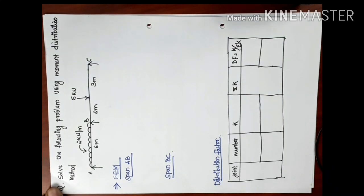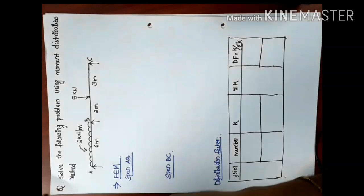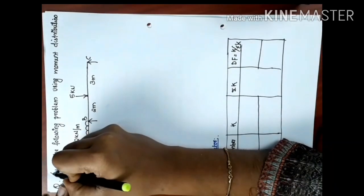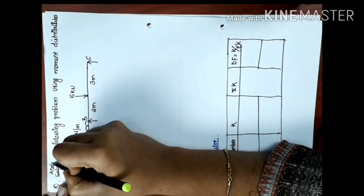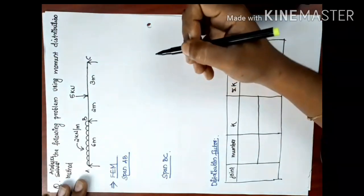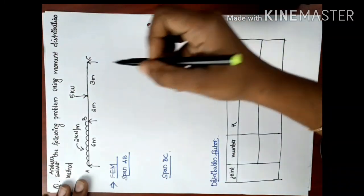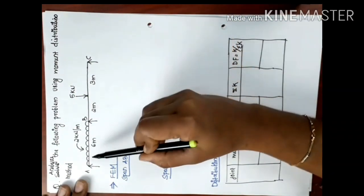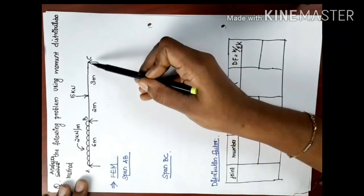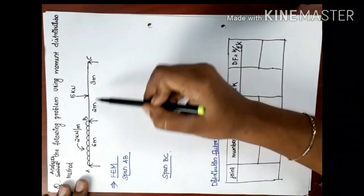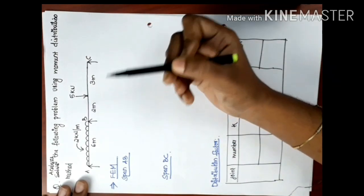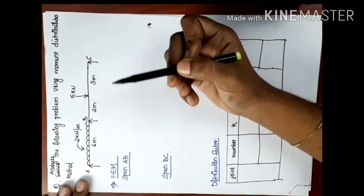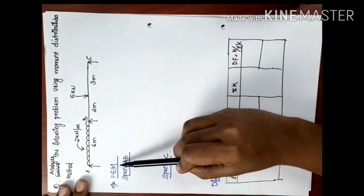Solve and analyze the following problem using the Moment Distribution Method. If you are doing a simple problem with joints A, B, and C, the first step in the Moment Distribution Method is to find the Fixed End Moment.